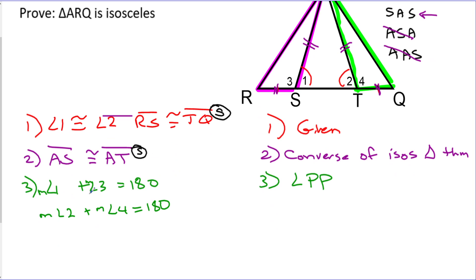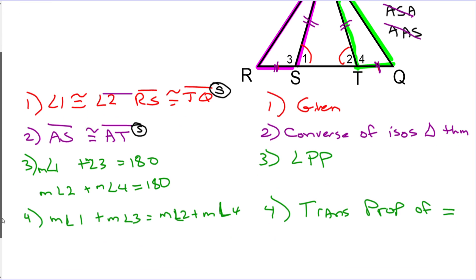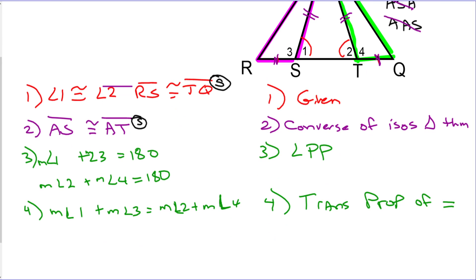My goal is to say that angle 3 is equal to angle 4, but they're currently in different equations, so I need them to be in the same equation. Step 4: the transitive property says that if two things are equal to the same thing - in this case both equations equal 180 - I can set them equal to each other. So the measure of angle 1 plus the measure of angle 3 equals the measure of angle 2 plus the measure of angle 4. This is the transitive property of equality. I now have angles 3 and 4 in the same equation.